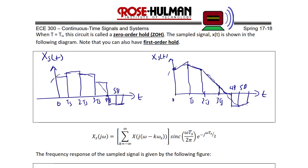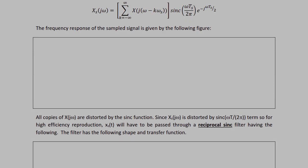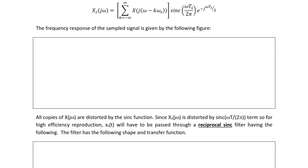When T equals TS, XS(jω) becomes the summation from K equals negative infinity to infinity of X(j(ω minus K·ωS)) times sinc(ω·TS / 2π) times e to the negative j·ω·TS over 2. The frequency response of the sampled signal is given by the following figure.